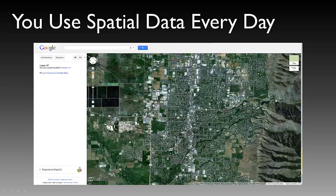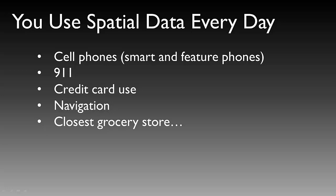You use spatial data every day whether you realize it or not. Every time you open Google Maps, you are using spatial data. Every time you look at an app on your phone, you are generally using some sort of spatial data. All cell phones — whether a smartphone or a feature phone — are generally GPS enabled, so you can transmit GPS or spatial data. If you dial 911, your phone goes into E911 mode and will transmit your GPS or last known GPS location to dispatchers. Every time you use your credit card, the company knows where you are, and navigation systems in your car use spatial data as well.